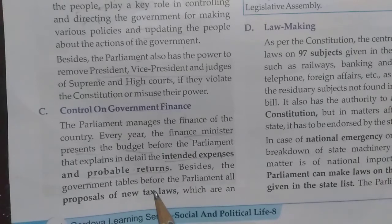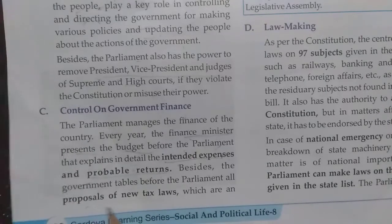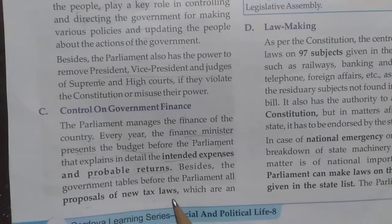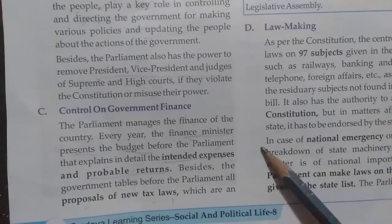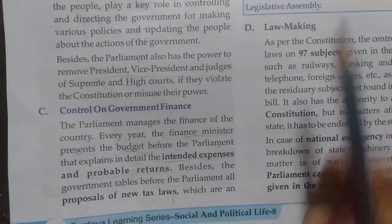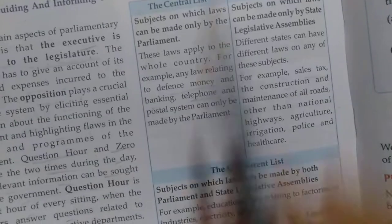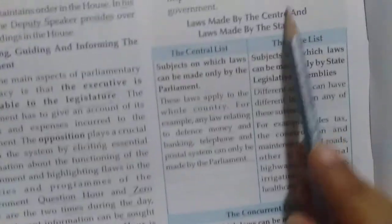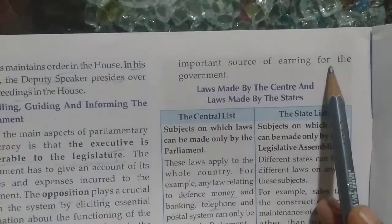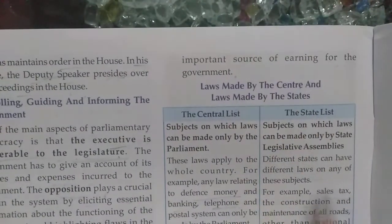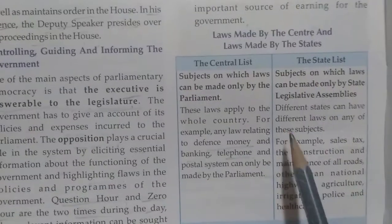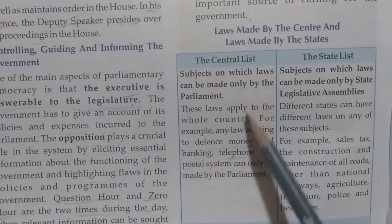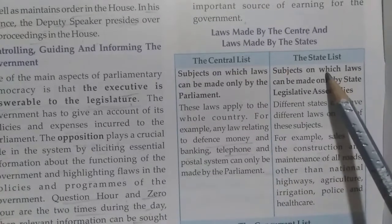Besides presenting the budget, the government also mentions proposals for new tax laws — how income can be increased through taxes, how much has been spent, and what returns have come in. These are important sources for the government. Some taxes are controlled by the center and some by the states.